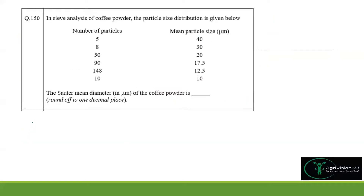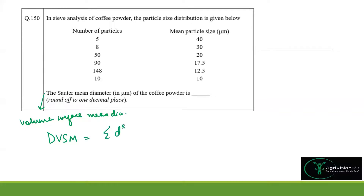Coming to question number 150: in sieve analysis of a coffee powder, the particle size distribution is given. We need to find out the volume surface mean diameter (also called the Sauter mean diameter) of the coffee powder in micrometers. The formula used is: D_vsm = Σ(D³·N) / Σ(D²·N), where D is the particle size diameter and N is the number of particles of that size.